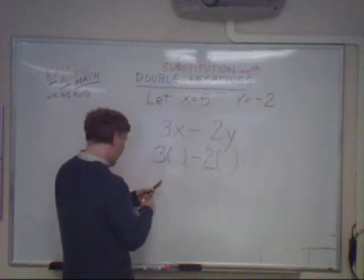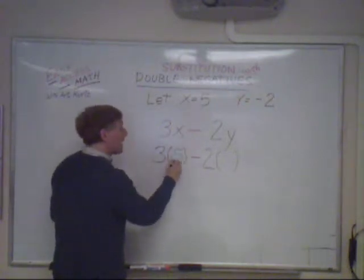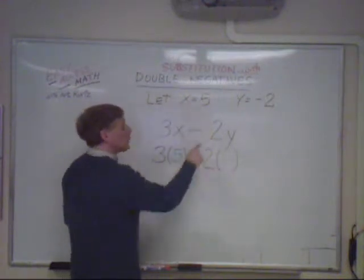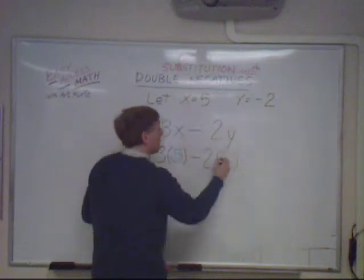So, wherever I see an x, I'm going to put 5, not negative 5, that's a regular 5. And for y, I'm going to put negative 2.